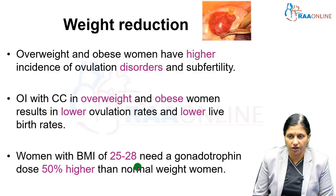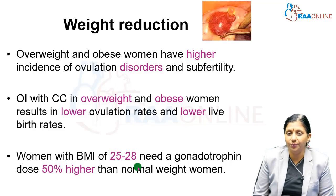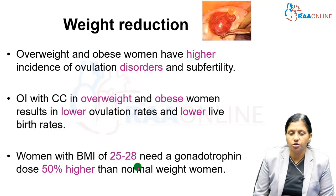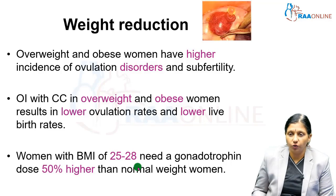Overweight and obese patients have a higher incidence of ovulation disorders and subfertility. Ovulation induction with clomiphene in overweight and obese women results in lower ovulation rates and lower live birth rates. Women with a BMI of 25 to 28 require a gonadotropin dose 50% higher than normal-weight women, so weight loss is essential to improve response to both clomiphene and gonadotropins.